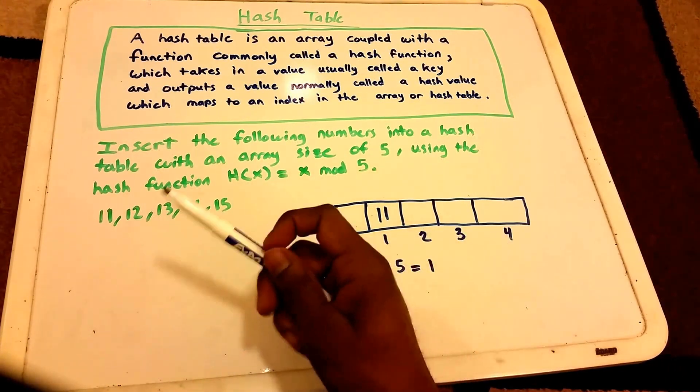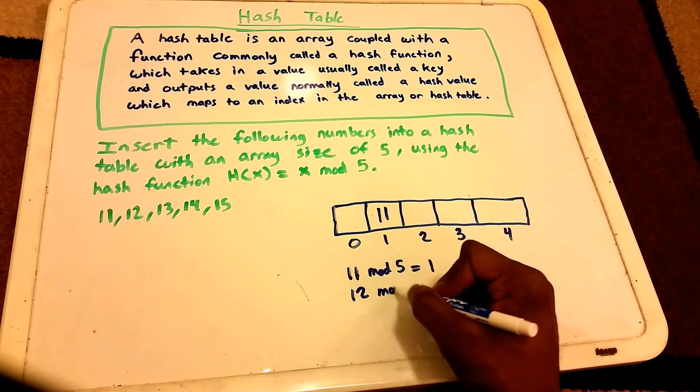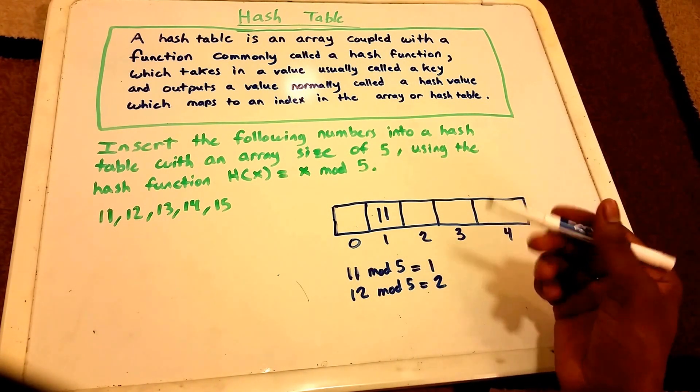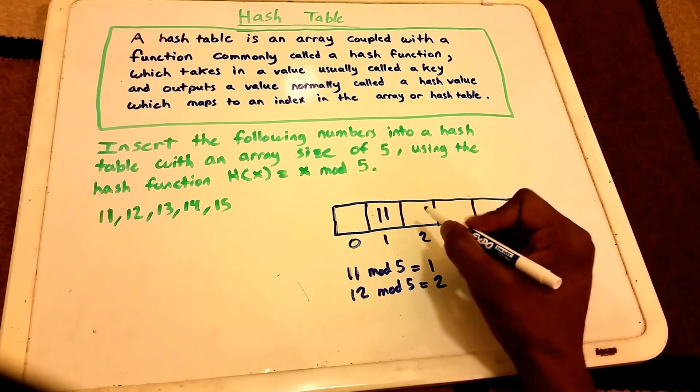Next up we have 12. We do 12 mod 5 and we get the hash value 2, which maps to index 2. So we place the number 12 there.